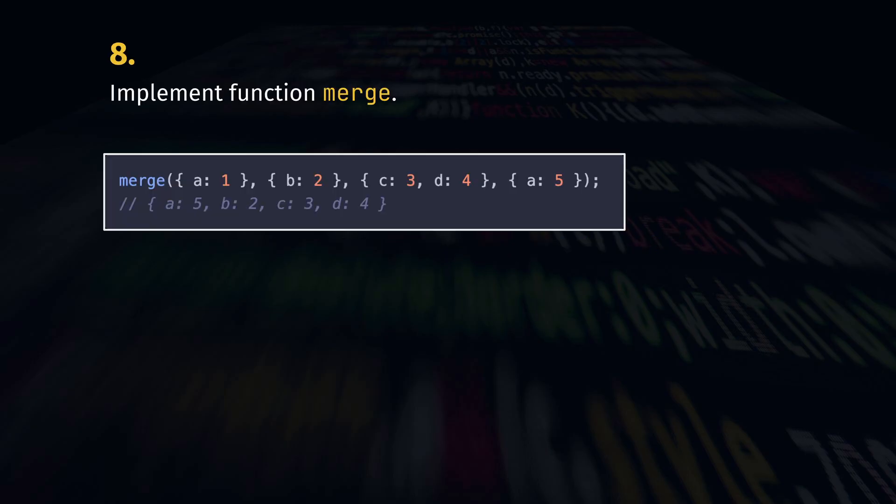Implement function merge, which combines many objects into one. It overrides existing keys and doesn't have to support nested objects.